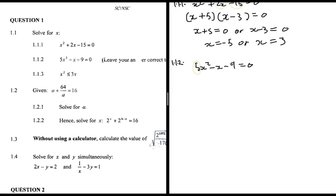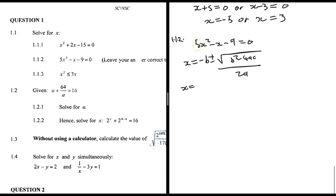So x = (-b ± √(b² - 4ac)) / 2a. Here, -b = -(-1) = +1, so we have 1 ± √((-1)² - 4·5·(-9)) divided by 2a. We get 1 ± √(1 - 4 × 5 × (-9)).